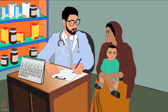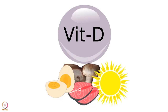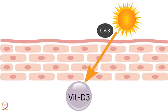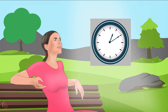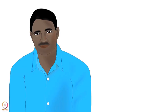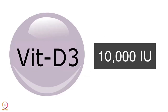Our body can produce vitamin D on exposure to UVB rays from sunlight. The best time for maximum UVB exposure is from 11am to 2pm. 15 to 20 minutes of daily midday sunlight exposure is recommended. For dark-skinned people, 3 to 5 times longer exposure is needed. Approximately 10,000 IU of vitamin D is generated during this period.